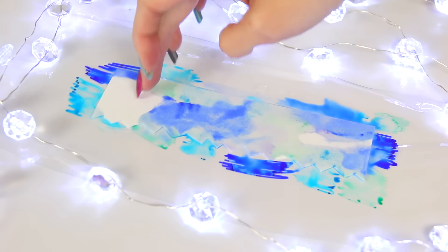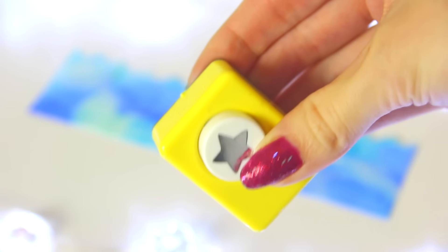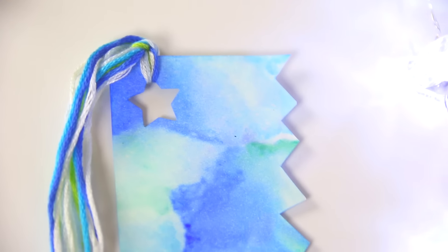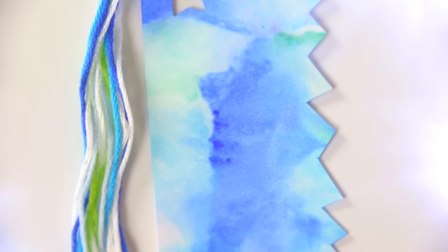And just to switch it up a bit, I used a star hole punch in the corner. Then I grabbed different colors of embroidery floss and tied those through the hole of the star. And bam, there you go. Tassel bookmark. Kind of tassel. It's just little stringies hanging out.